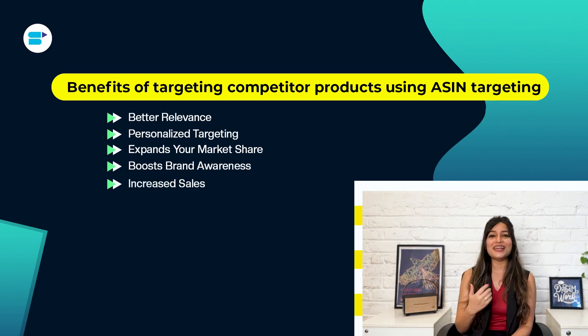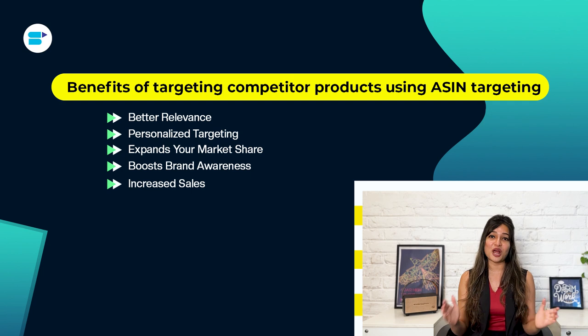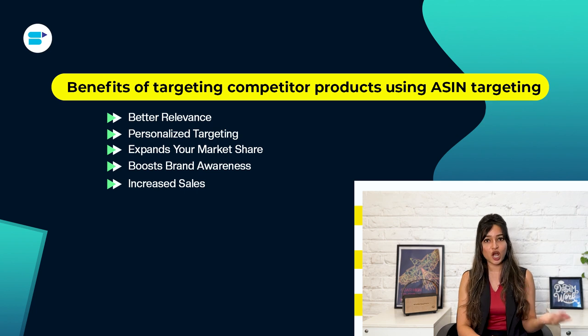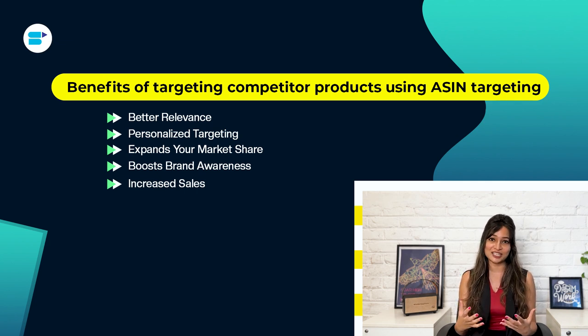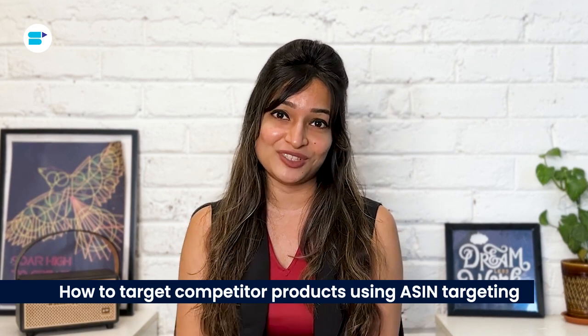Next is increased sales. ASIN targeting can enhance your sales by driving more traffic to your product pages and increasing brand recognition. For instance, if you sell organic skincare products and target your ads to the ASINs of well-known conventional skincare products, you might convert some of those customers. Effectively targeting your competition within Amazon advertising is a fundamental strategy for the success of your campaign.